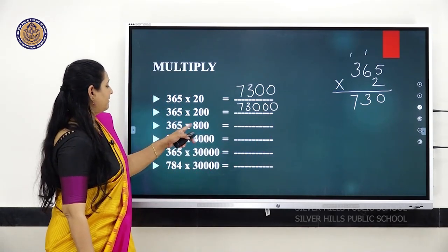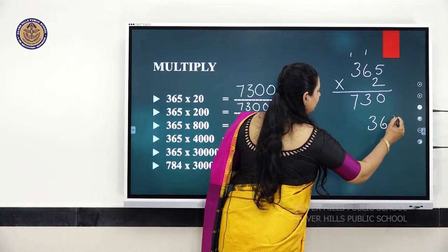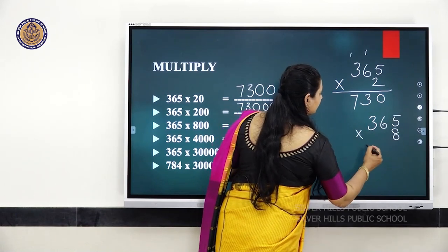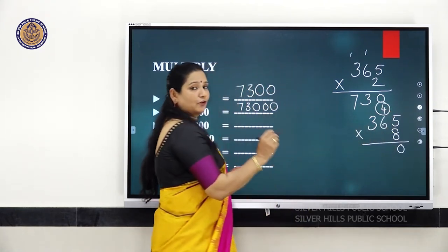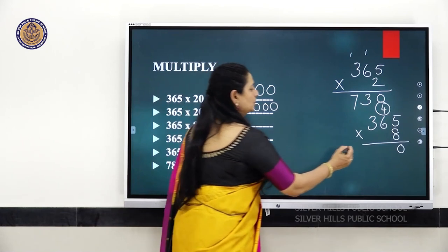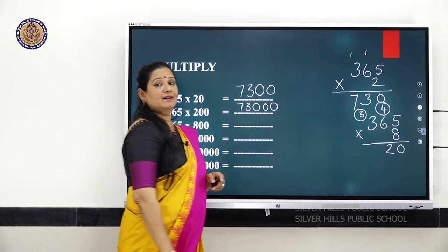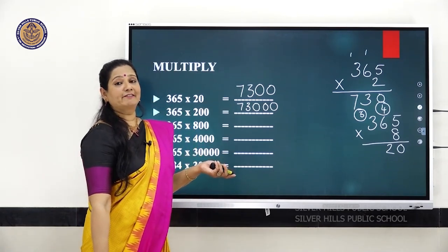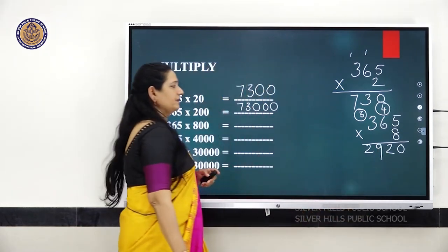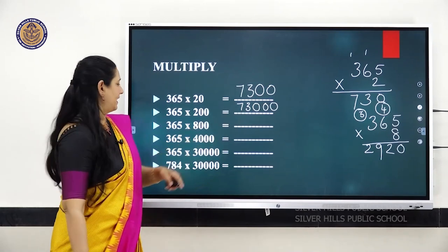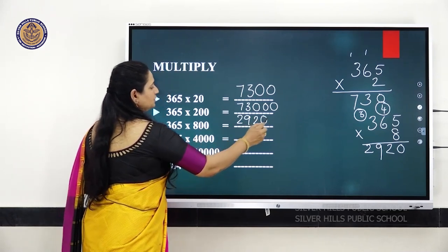Next, 365 into 800. Multiply 365 by 8: 8 fives are 40, carry 4; 6 eights are 48, plus 4 is 52, write 2, carry 5; 8 threes are 24, plus 5 is 29. So you get 2,920. Then add 2 zeros.